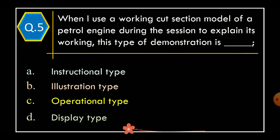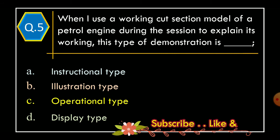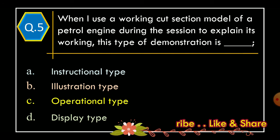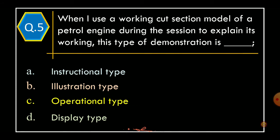Question 5: When I use a working cut-section model of a petrol engine during the session to explain its working, this type of demonstration is — Option A, instructional type; Option B, illustration type; Option C, operational type; Option D, display type.